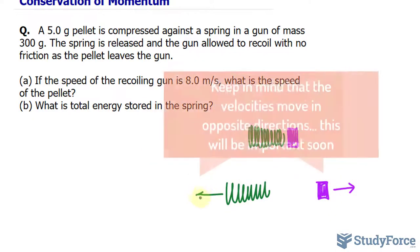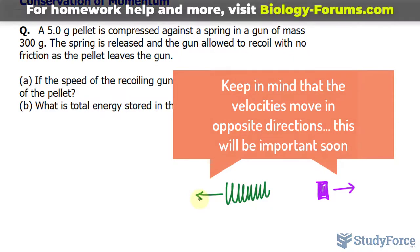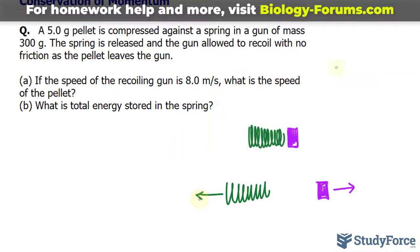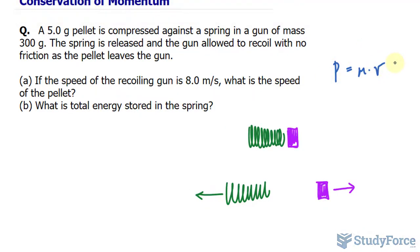Now, the reason why we're using the law of conservation of momentum here is because there are no external forces. And as a result, we'll be using the formula for momentum being P is equal to the mass times velocity. Since there are no external forces and we're using the conservation of momentum,